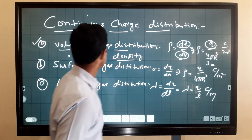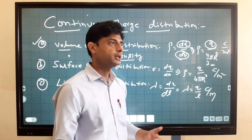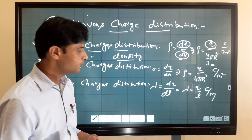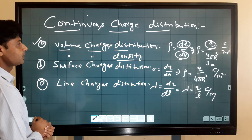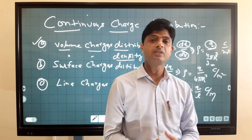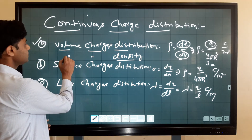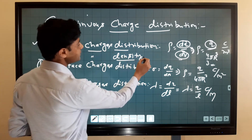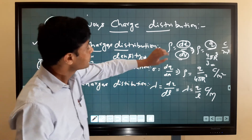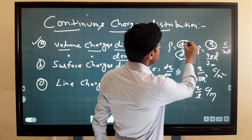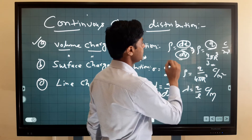Today's topic is continuous charge distribution — distribution of charge in different types of body configurations. The first type is volume charge distribution, meaning distribution of charge in a three-dimensional configuration or in a volume, denoted by volume charge density. Volume charge density is defined as distribution of charge per unit volume, expressed as dq upon dv.